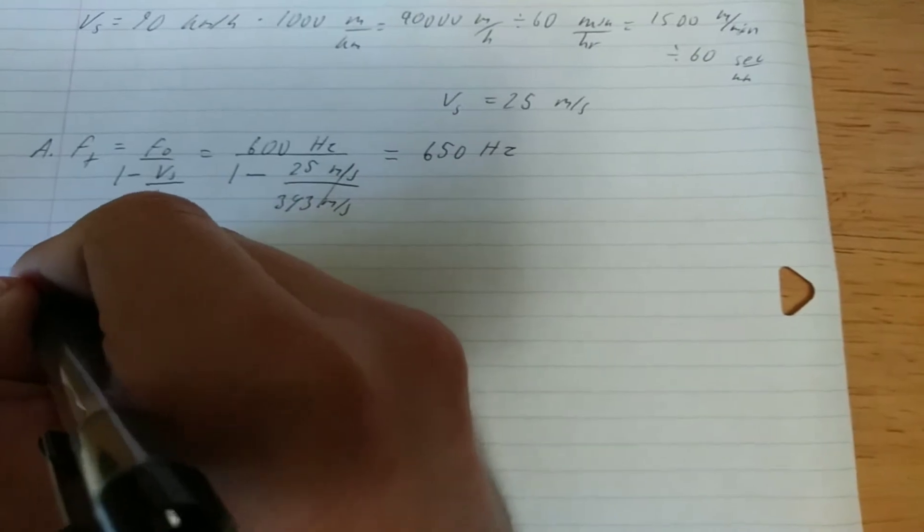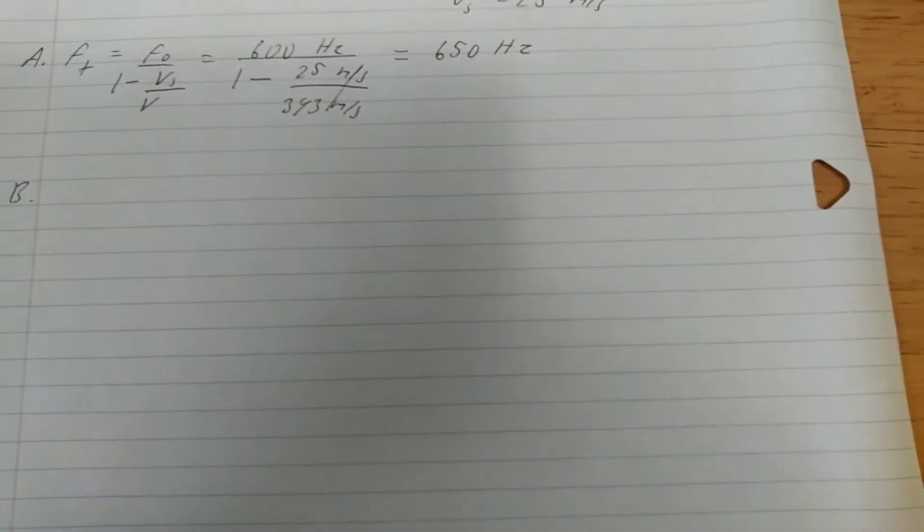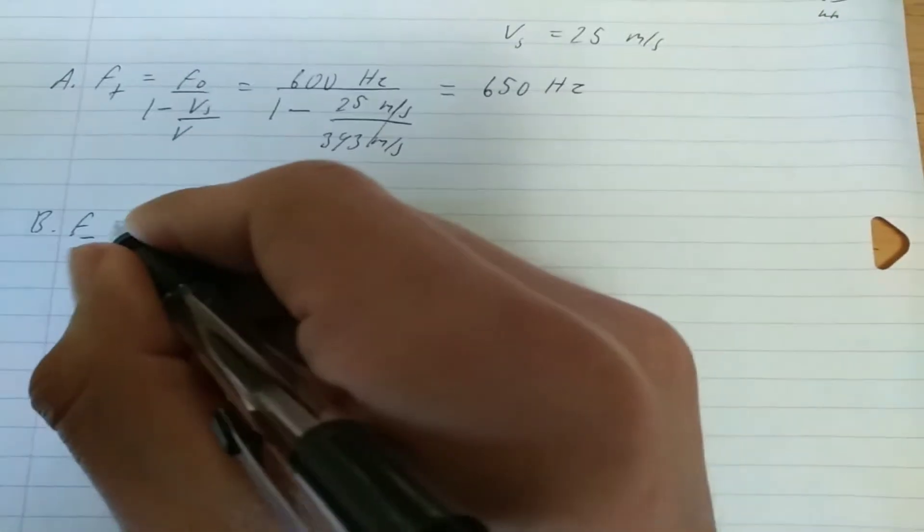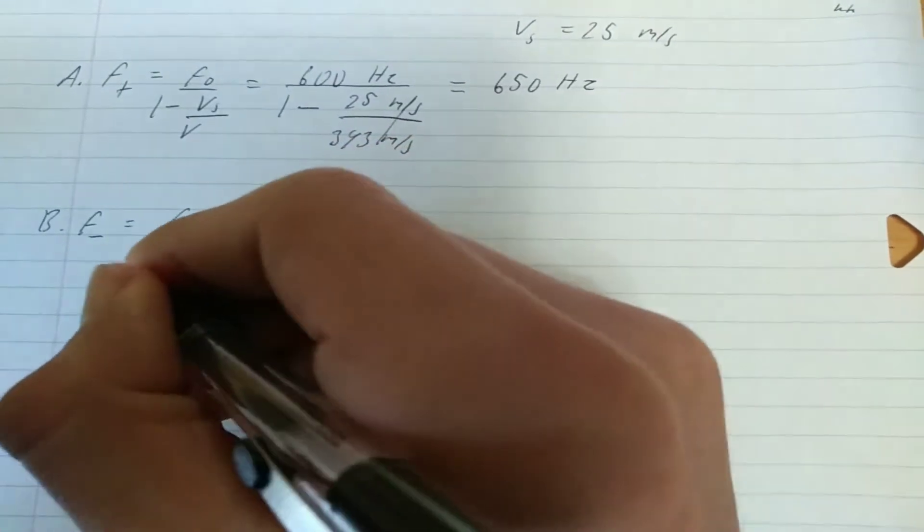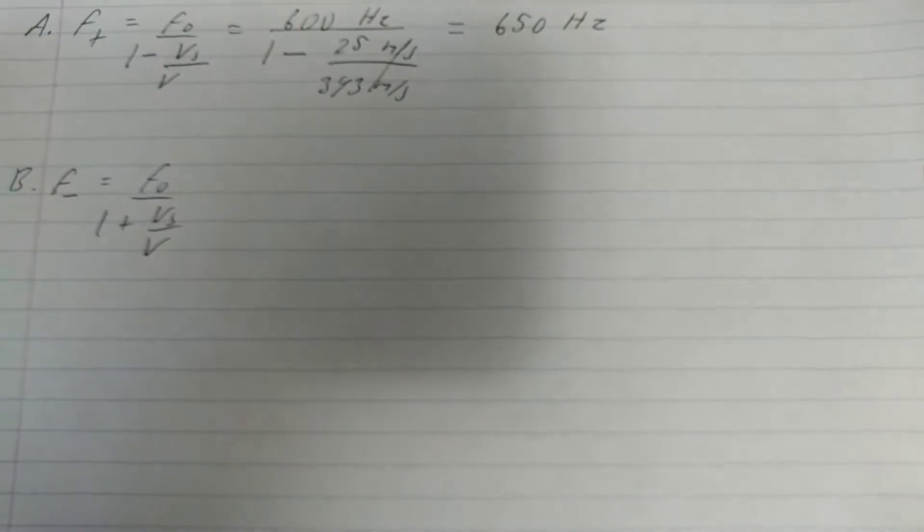Now we move on to part B, which is the frequency of the sound heard by somebody behind the car. In this case, we denote behind the car with F sub minus, equal to our initial frequency over 1 plus the velocity of our source divided by the velocity of sound in air.